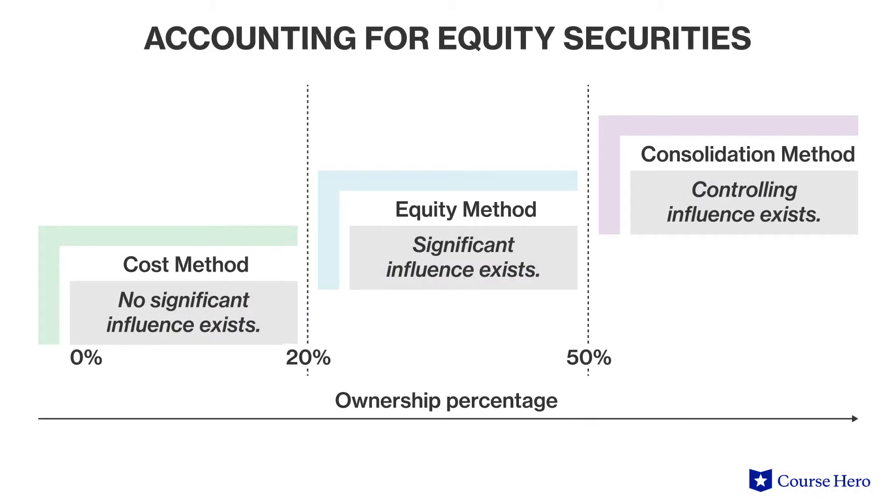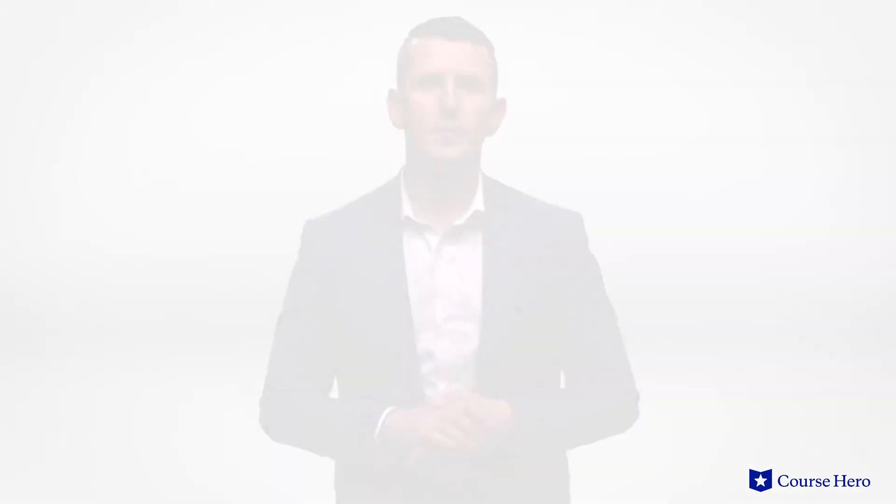If the level of ownership and influence between an investor and investee is significant but does not amount to control, this is understood as more than 20% but less than 50%, then the investment is accounted for using the equity method. In this method, profits or losses of the investee company are recorded in the investor company's income statement. The amount of profit or loss that is incorporated and recorded is based on the ownership percentage.